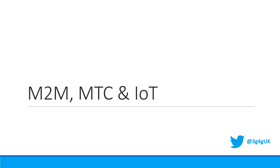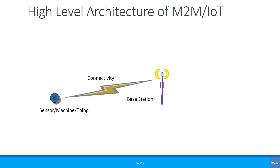Hello everyone. In this particular video, we are going to look at M2M — machine to machine — machine type communications and Internet of Things. Let's start with the basic high-level architecture of M2M or IoT, with this simple schematic.